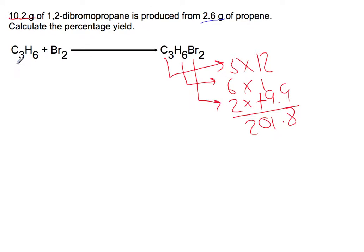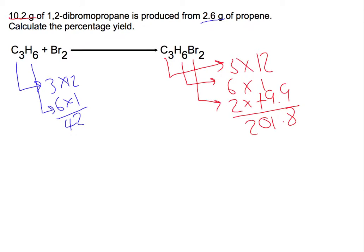We're also going to calculate the gram formula mass of propene. The actual yield is 10.2 grams. We want to find out in grams what the theoretical yield should have been from the 2.6 grams of propene. So we're not using 2.6 grams as our theoretical yield — we're using that to calculate our theoretical yield.